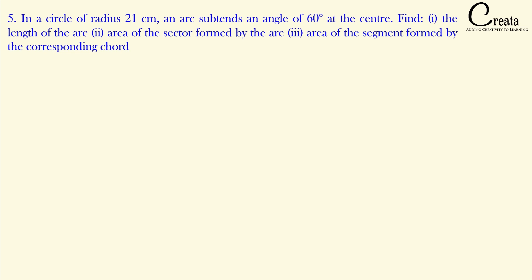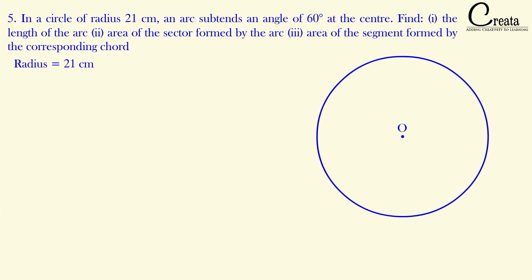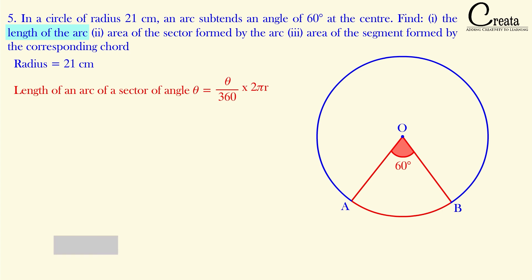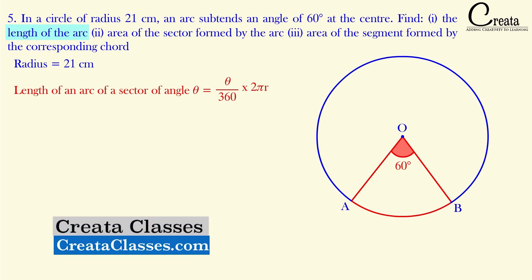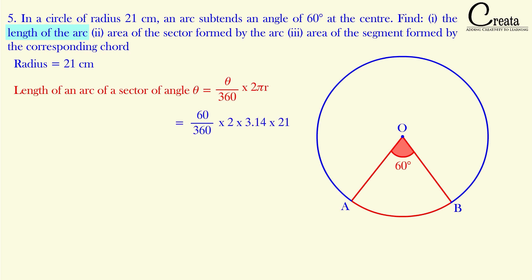Let's move to question number 5. In a circle of radius 21 cm, the arc subtends an angle of 60 degrees at the center. Find: first, the length of the arc; second, area of the sector formed by the arc; third, area of the segment formed by the corresponding chord. The arc length formula is (theta / 360°) × 2πr. With theta = 60° and radius = 21 cm, the length of the arc = 22 cm.